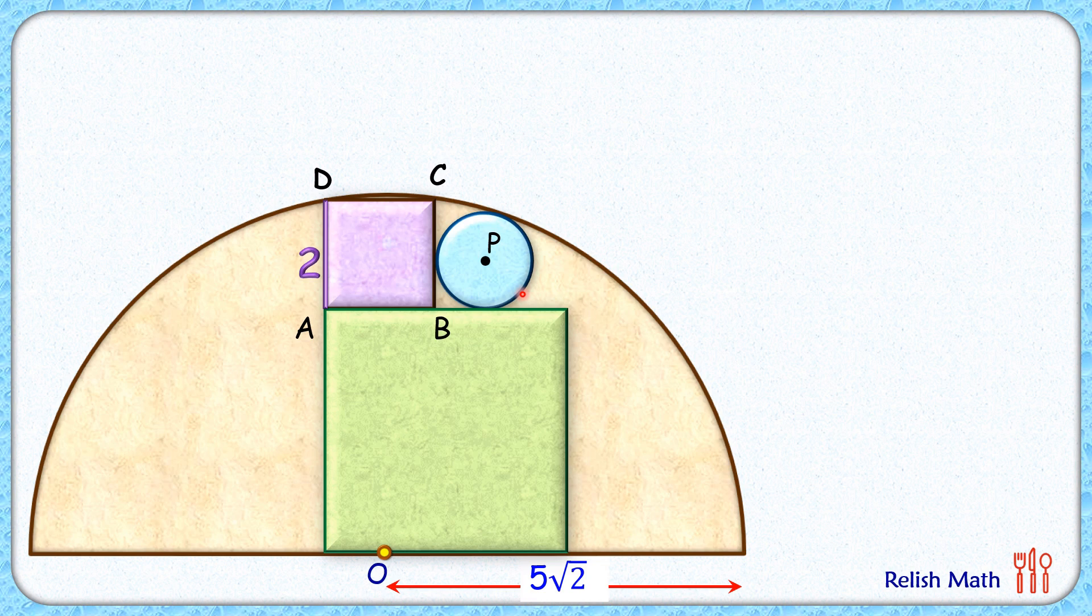How about this blue circle? This blue circle is touching this square here and it's touching the green square and it's touching the semicircle. Now we know that when two circles are touching each other, their centers (that's O and P) and point of contact lie in a straight line.